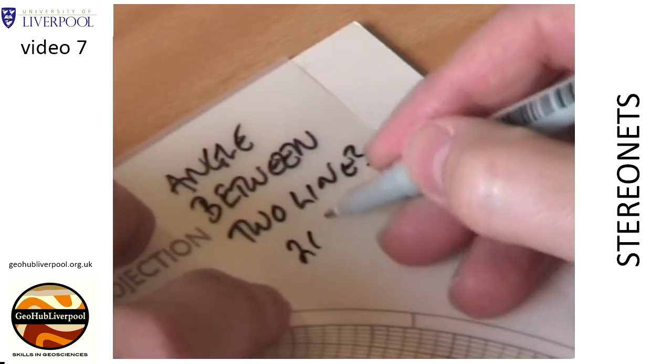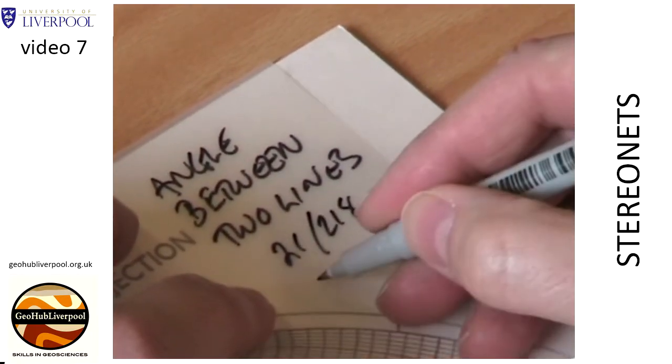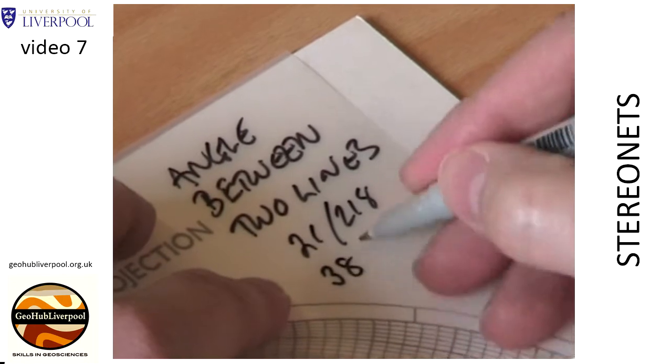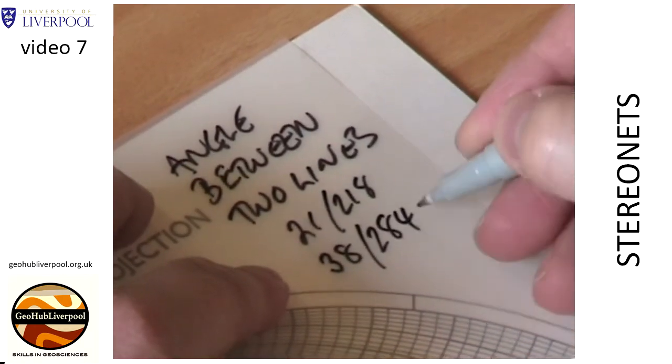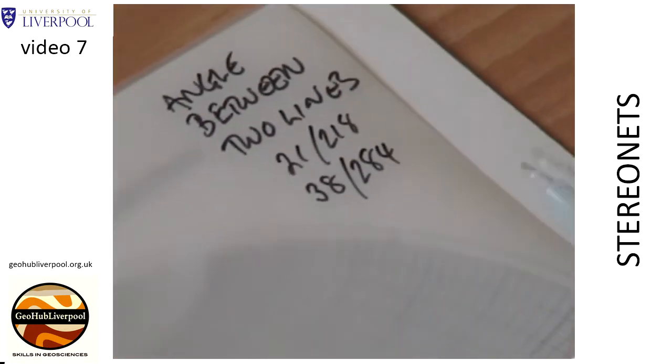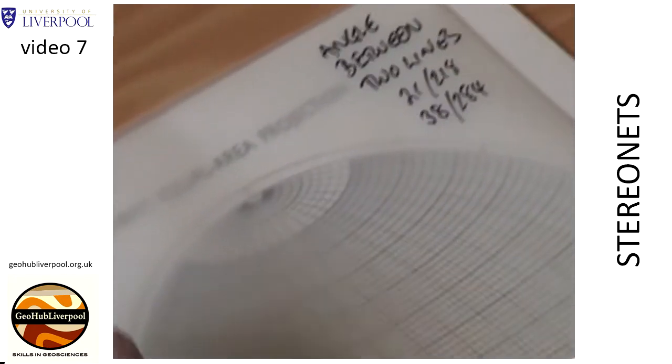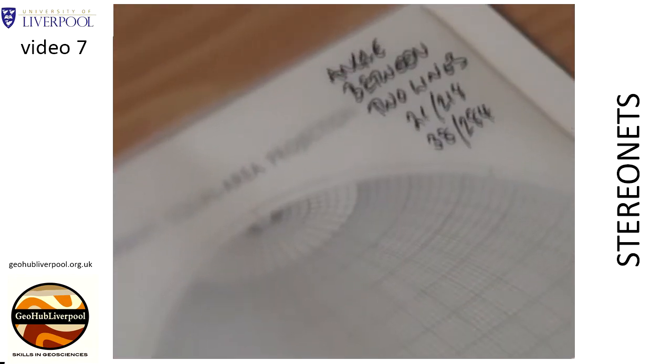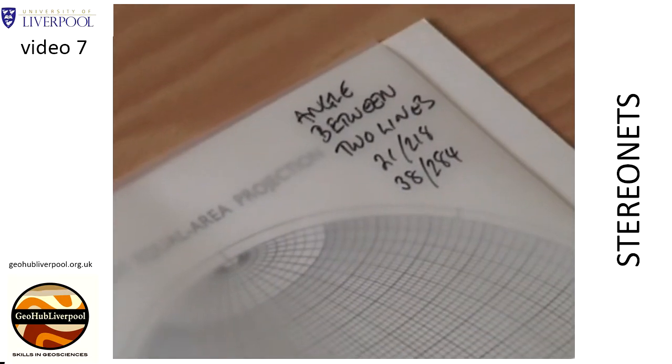There are two lines to plot. The first line has a plunge of 21 degrees in the direction 218 degrees. The second line plunges at 38 degrees in the direction 284 degrees.